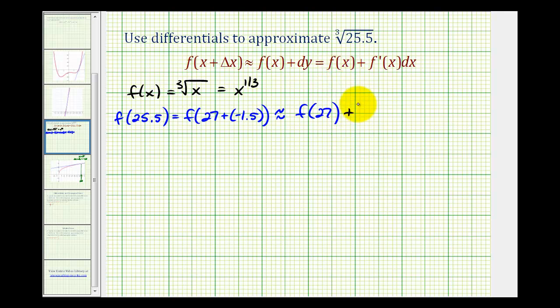But then we're going to add the change in y along the tangent line, which is differential y, which is equal to f prime of x times dx. So we're going to add f prime of 27 times dx, which is negative 1.5.